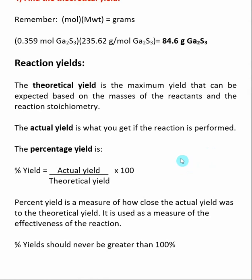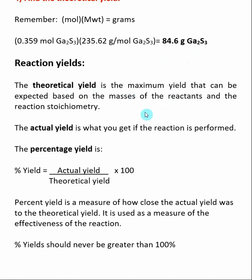In reality, when we run the reaction we get a certain amount of gallium sulfide out — that's why it's called the theoretical yield, because in theory this is the maximum amount we can make. In reality, when you run the reaction, you will most likely not make this much gallium sulfide. You'll make something less, but we want a number that tells us how closely our actual reaction came to the theoretical yield.